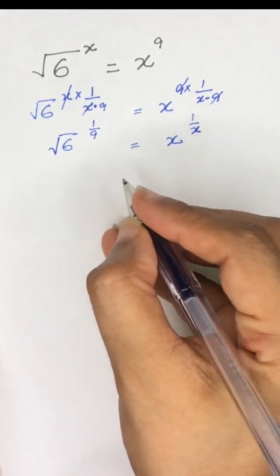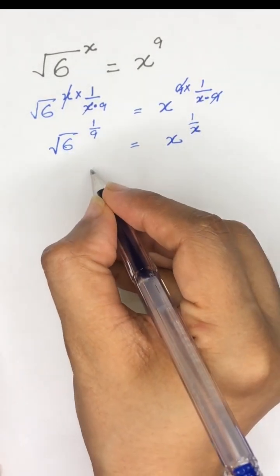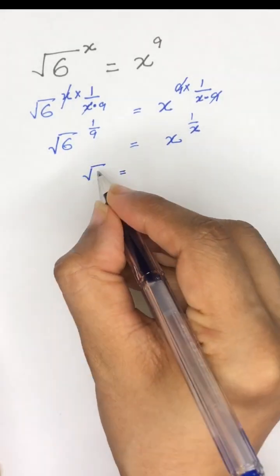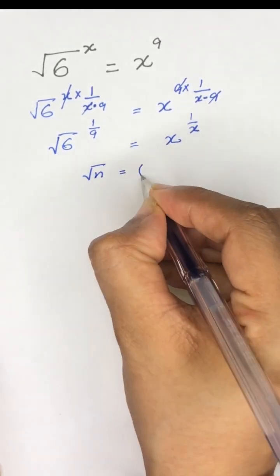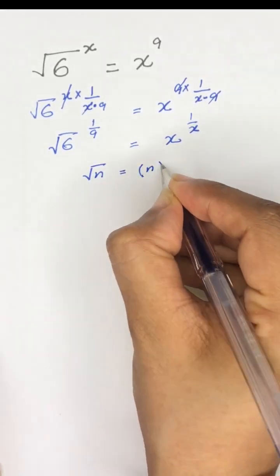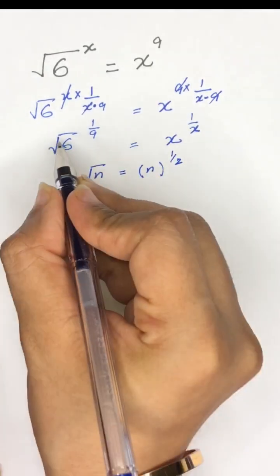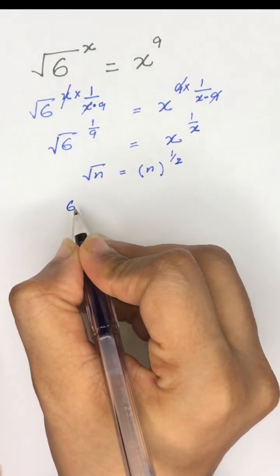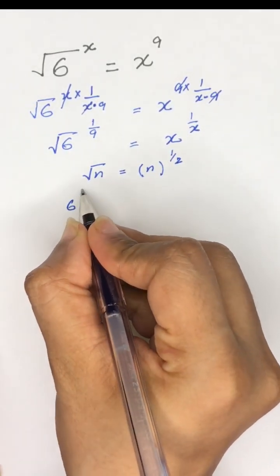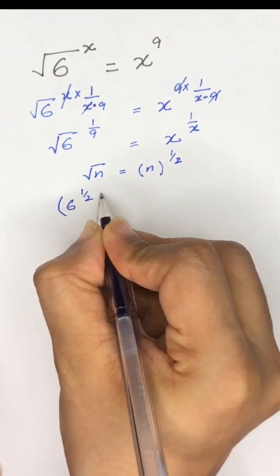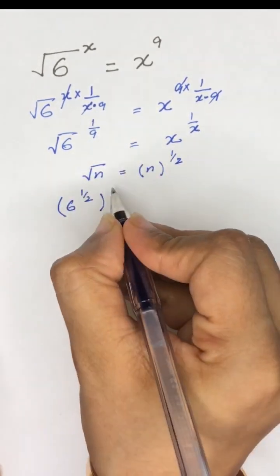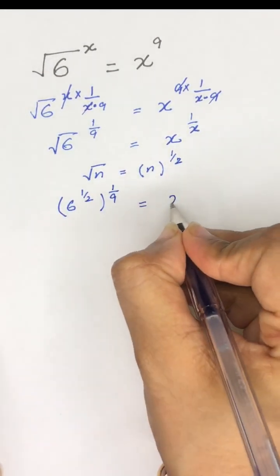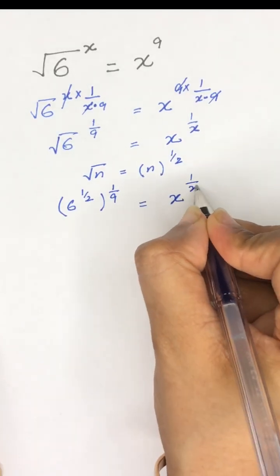As we know, the square root of any number is the same as that number to the power 1 divided by 2. So it will become 6 to the power 1 divided by 2, and its power 1 divided by 9, is equal to x to the power 1 divided by x.